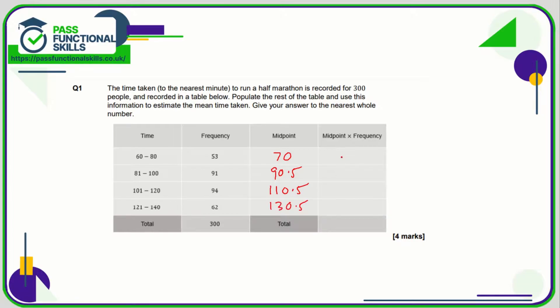101 plus 120 divide that by 2 is 110.5. 121 plus 140 and divide that by 2 is 130.5. This column here is fairly self-explanatory. It says midpoint times frequency, so we need to multiply these two figures.